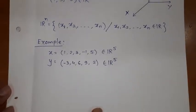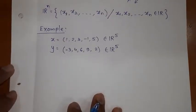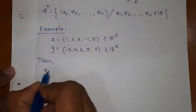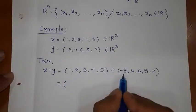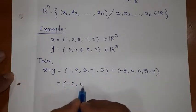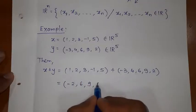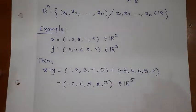When you have two elements of R^5, you can add or subtract or scalar multiplication is possible. Let's see how to add them. I am going to find X plus Y. Component-wise addition: 1 plus -3 will be -2, 2 plus 4 is 6, 3 plus 6 is 9, -1 plus 9 is 8, 5 plus 2 is 7. So again, this is an element of R^5.